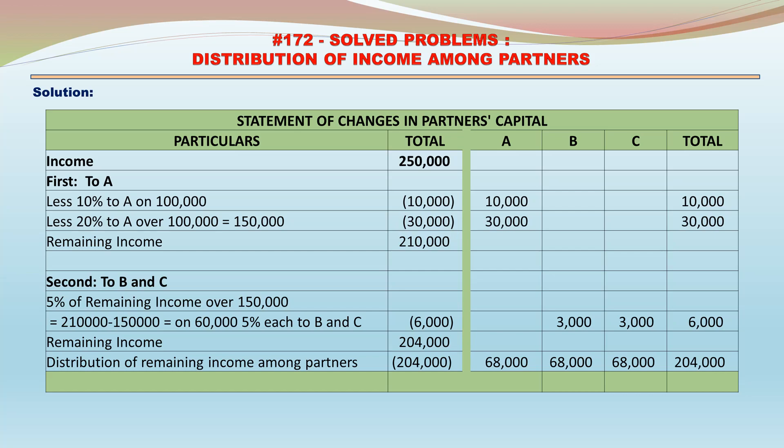Distribution of remaining income among partners: 204,000 — 68,000 to A, 68,000 to B, 68,000 to C, equally among the partners. Total: 204,000. The share of A in the net income comes to 108,000. Share of B comes to 71,000. Share of C comes to 71,000. Total Net Income: 250,000.